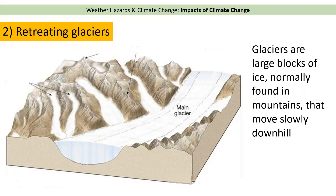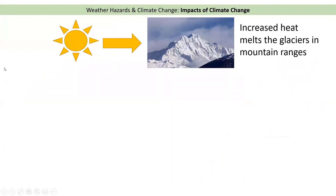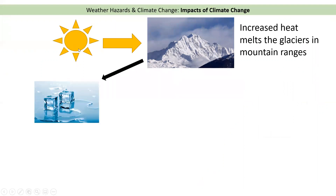An impact of climate change is that glaciers are starting to melt, and that's what we mean by retreating — they're starting to disappear. As the world gets hotter because of climate change, the ice in the mountains begins to melt.